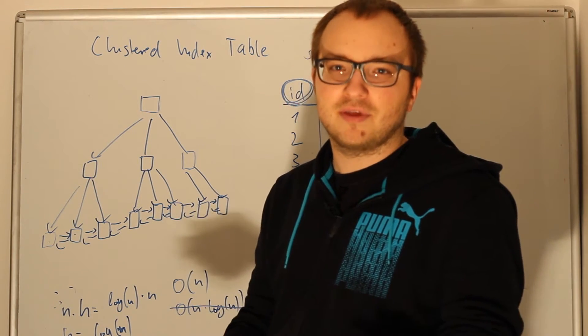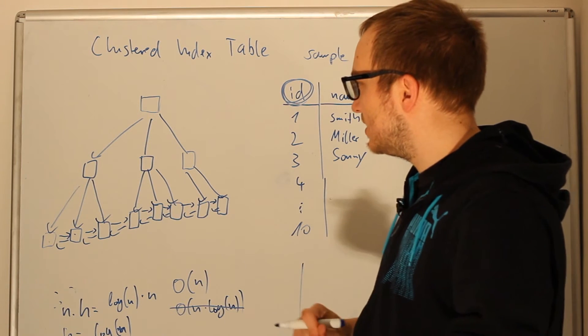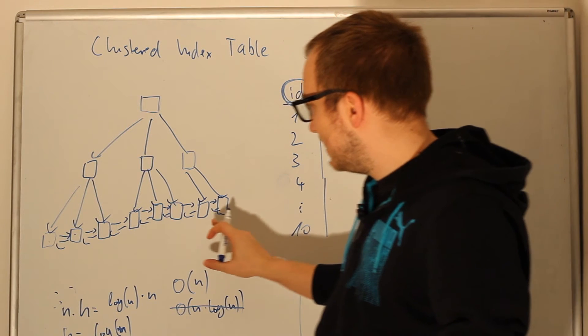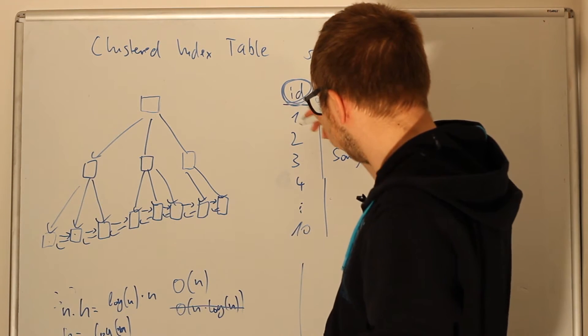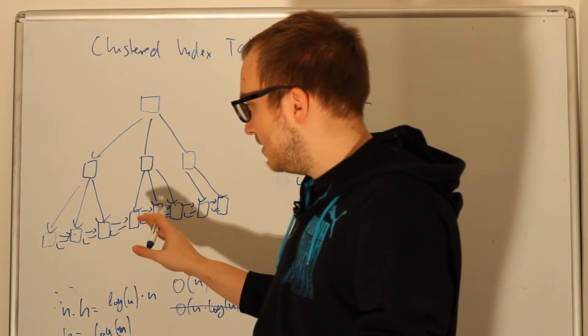The last thing we want to cover is what is actually saved where. Of course we only have the data in the leaf nodes, so that means the actual rows. This is a row, this is a row, and so on—those rows are only stored in the leaves.